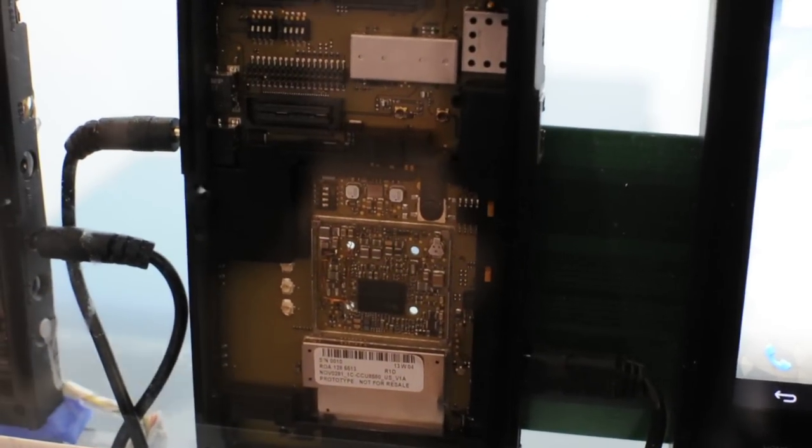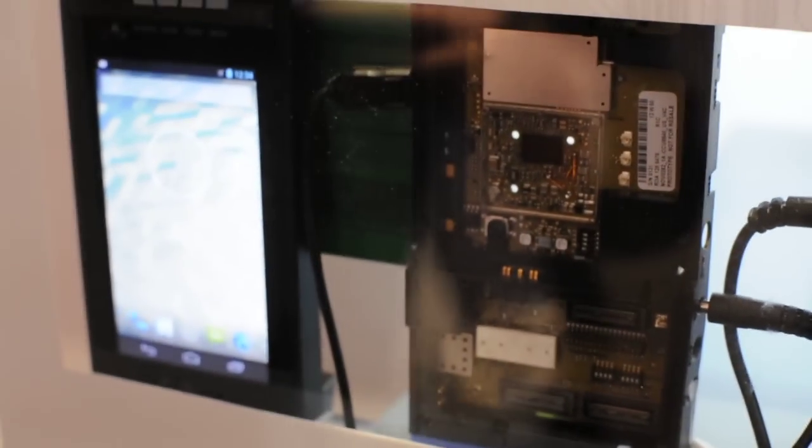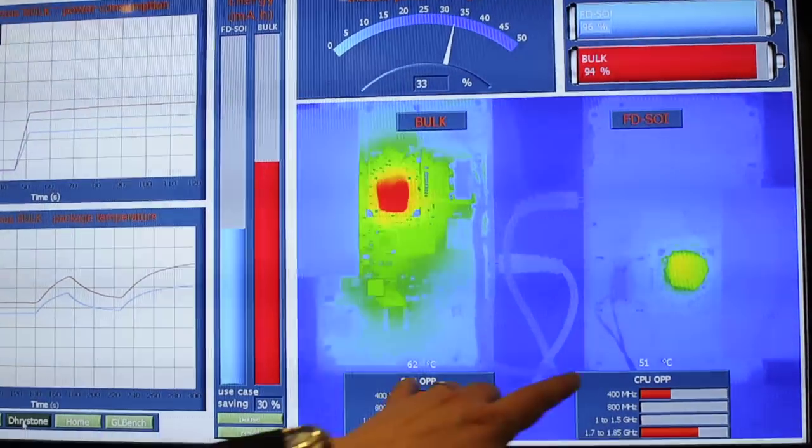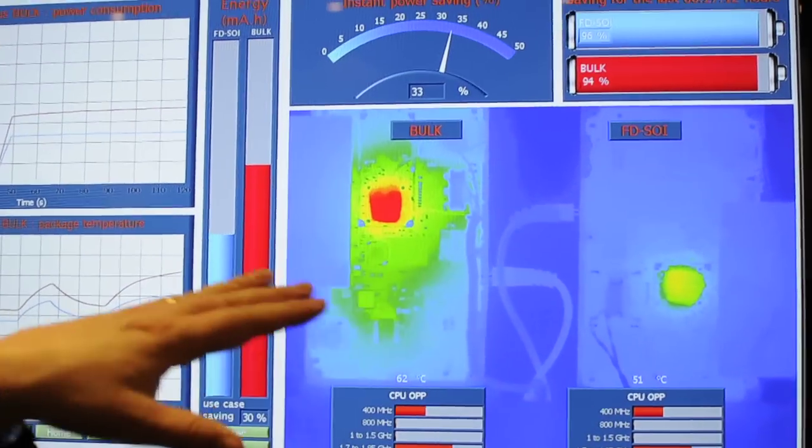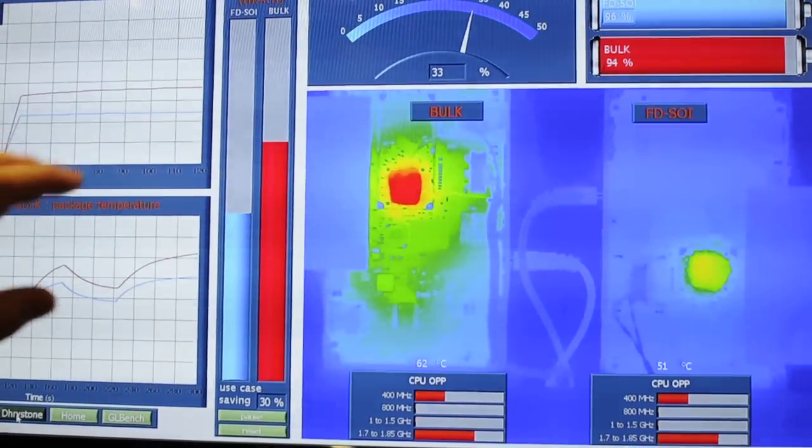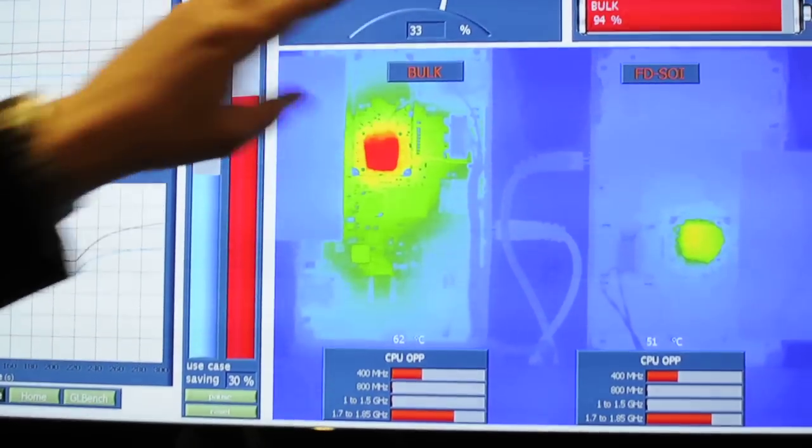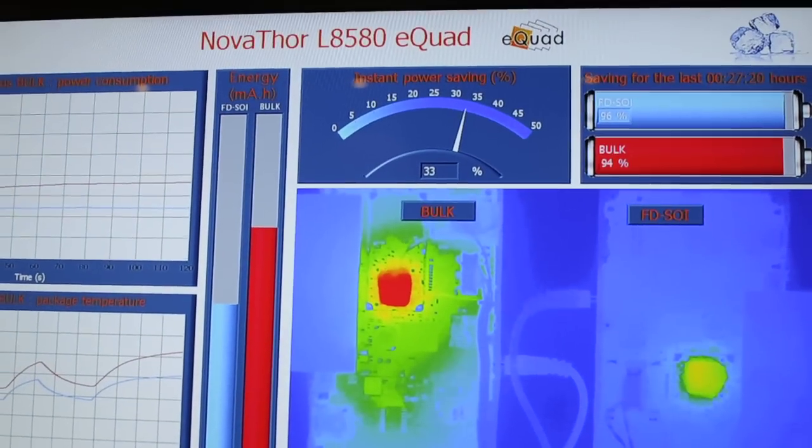So here you can see that we are running this use case, and we still have 30% savings, and we have a difference on the temperature that is significant. So it is 10 degrees here, but basically what is really important is that this 30% savings that we have here.